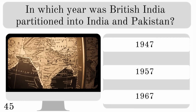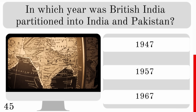In which year was British India partitioned into India and Pakistan? 1947, 57 or 67? And that was in 1947.